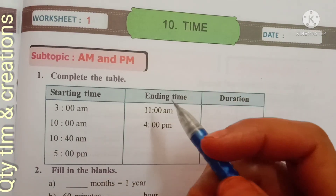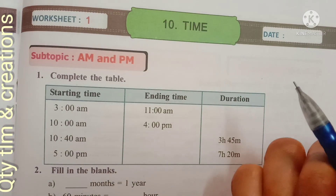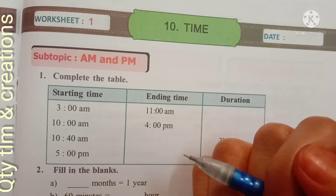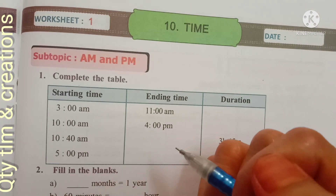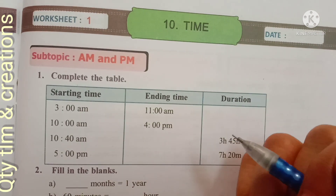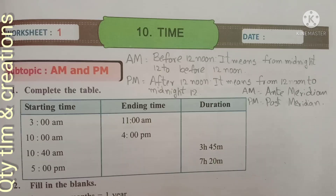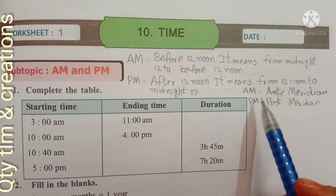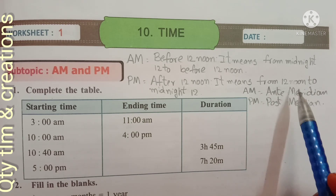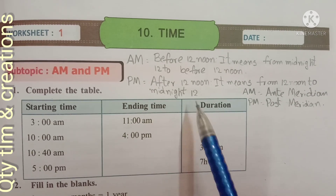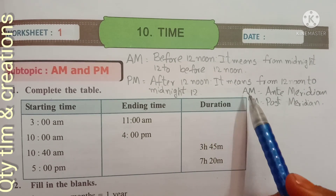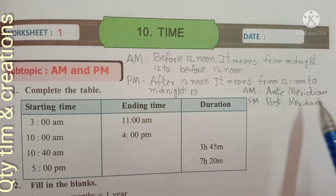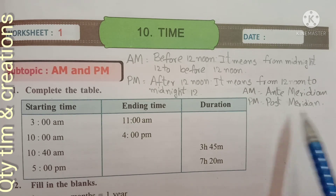Here we have to know AM and PM. AM means before 12 noon — from midnight 12 to before 12 noon. PM means after 12 noon — from 12 noon to midnight 12. The abbreviation AM means ante-meridian and PM means post-meridian.